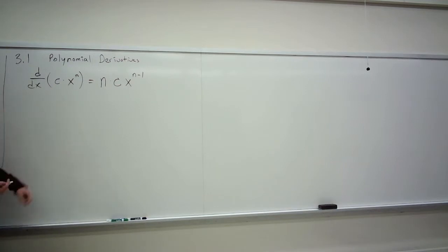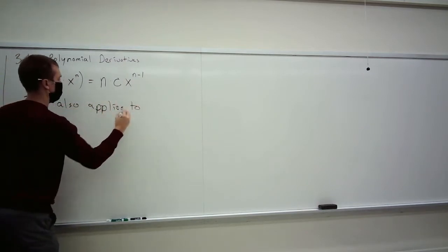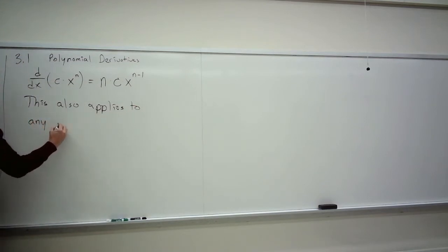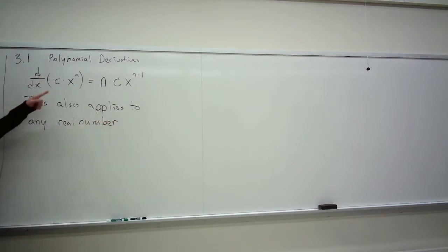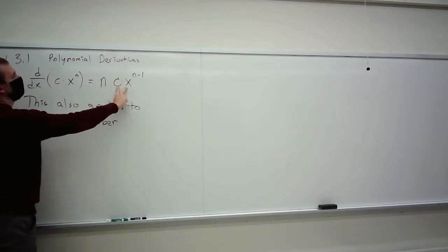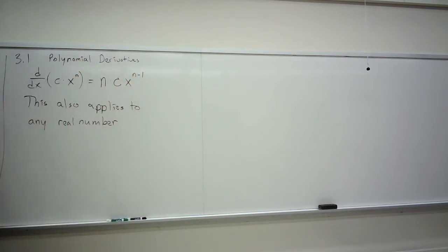For any power function, you can just do this. And it's great, because polynomials are just sums or differences of powers. So we can just take derivatives in a chain, right? Not to confuse the chain rule, but we take the derivative of the first term and add up to the derivative of the second term, and each of them is just done this way. But then this also applies to any real number.